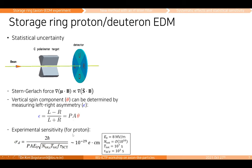To achieve 10 to the minus 29 electron centimeter sensitivity, we need, for example, an 8 MV/m electric field in the storage ring, an order of 10 to the 10 stored particles, a total experimental time of 10 to the 7 seconds, and a spin coherence time — which tells you how long the beam maintains its polarization — of around 10,000 seconds.